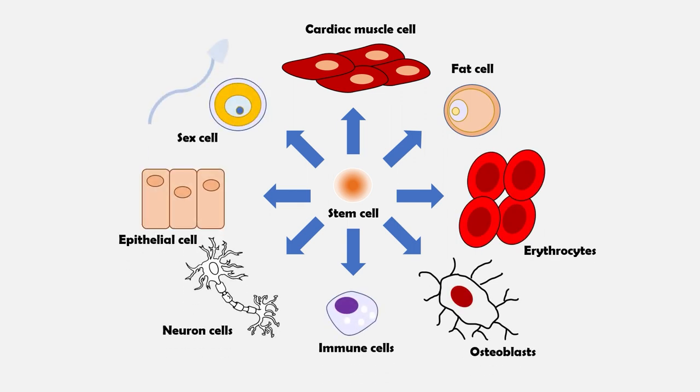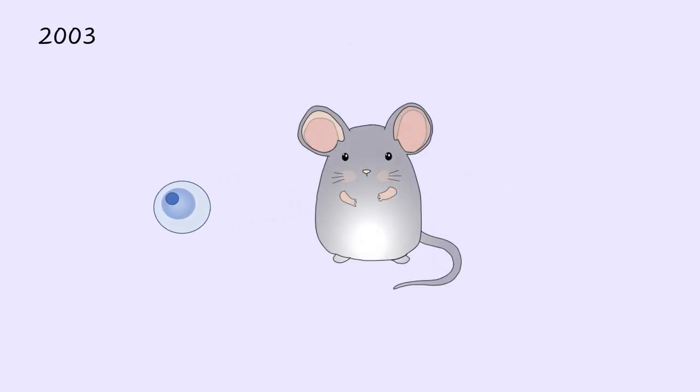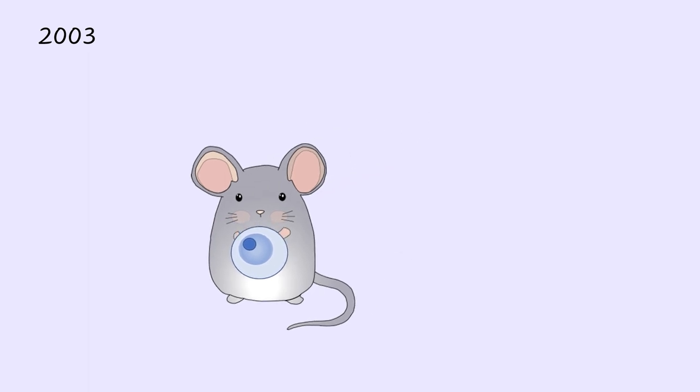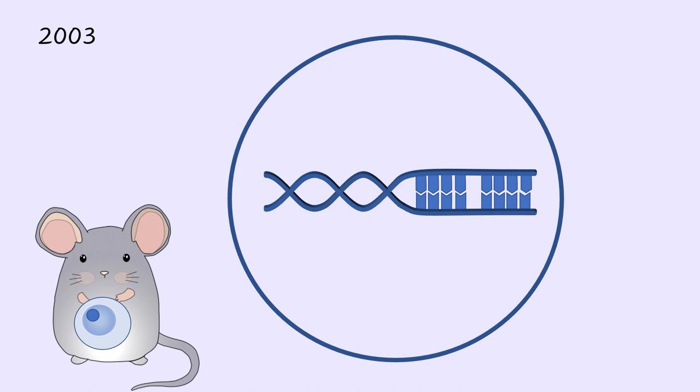However, how this worked remained a mystery until Konrad Hochedlinger came along in 2003. Hochedlinger and his group of researchers found that these oocytes had the ability to reset the epigenetic modifications in terminally differentiated cells, leaving the genome unaltered in the process.